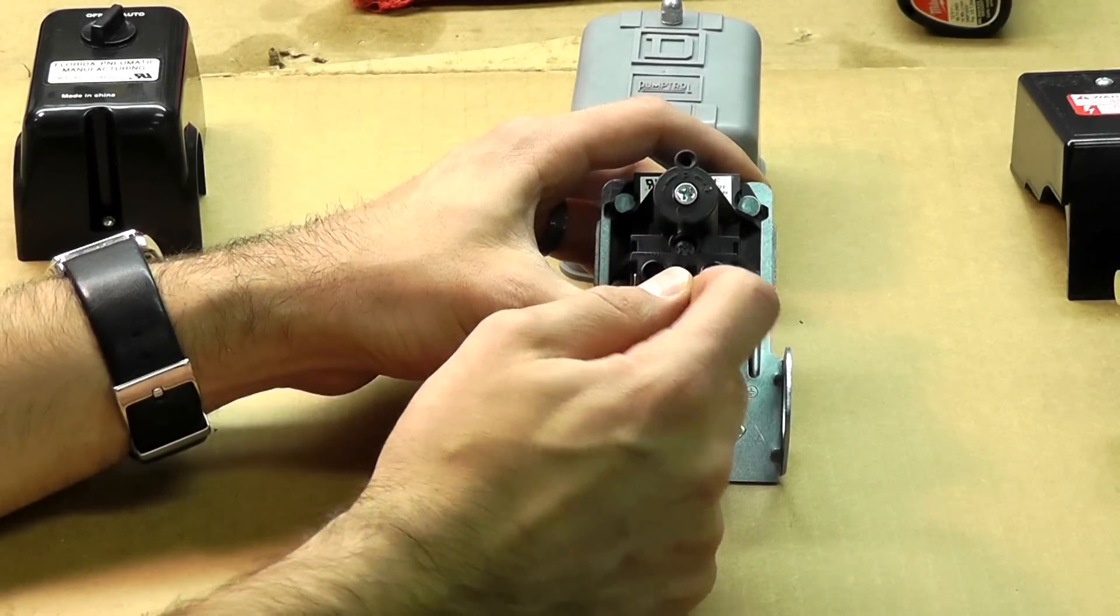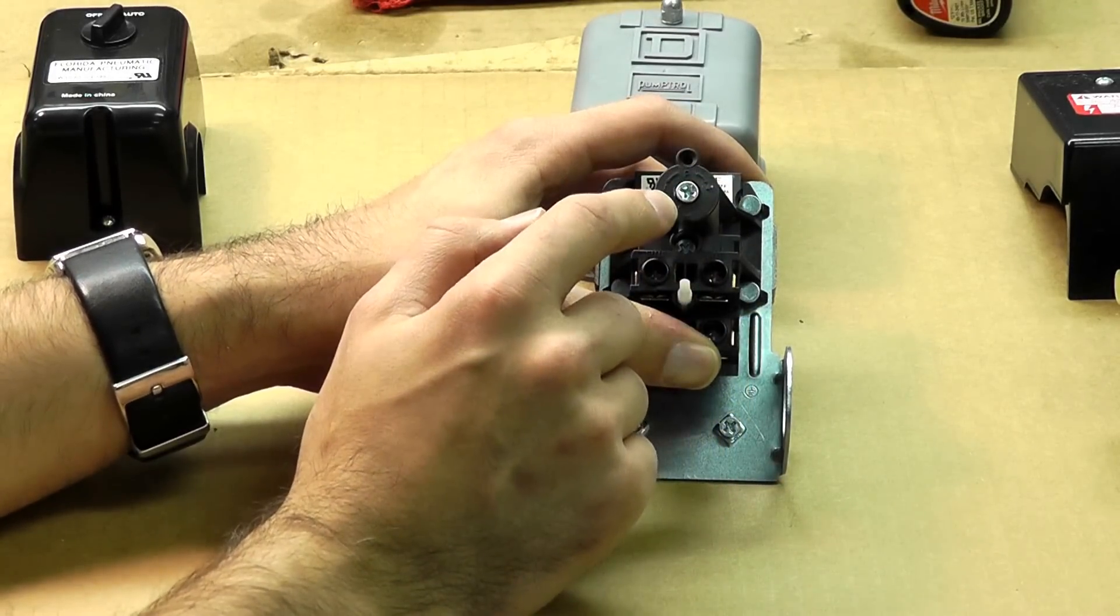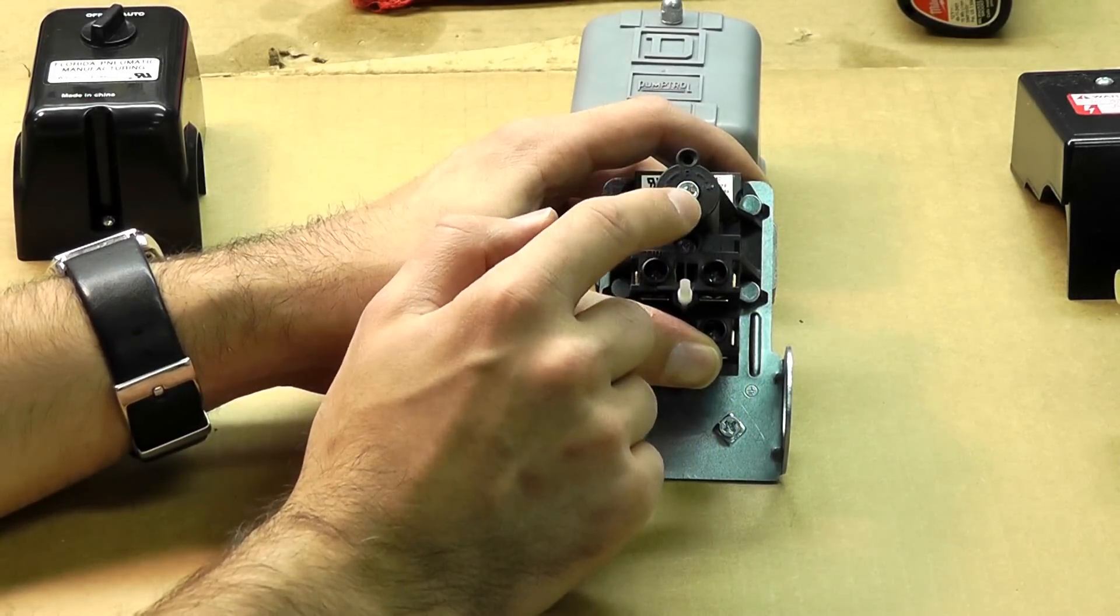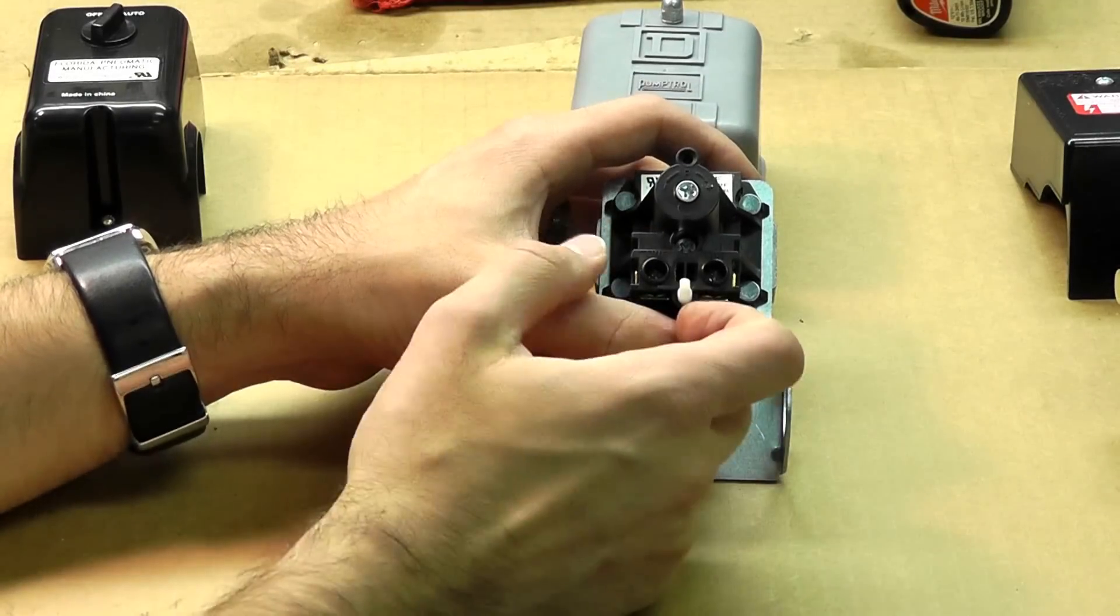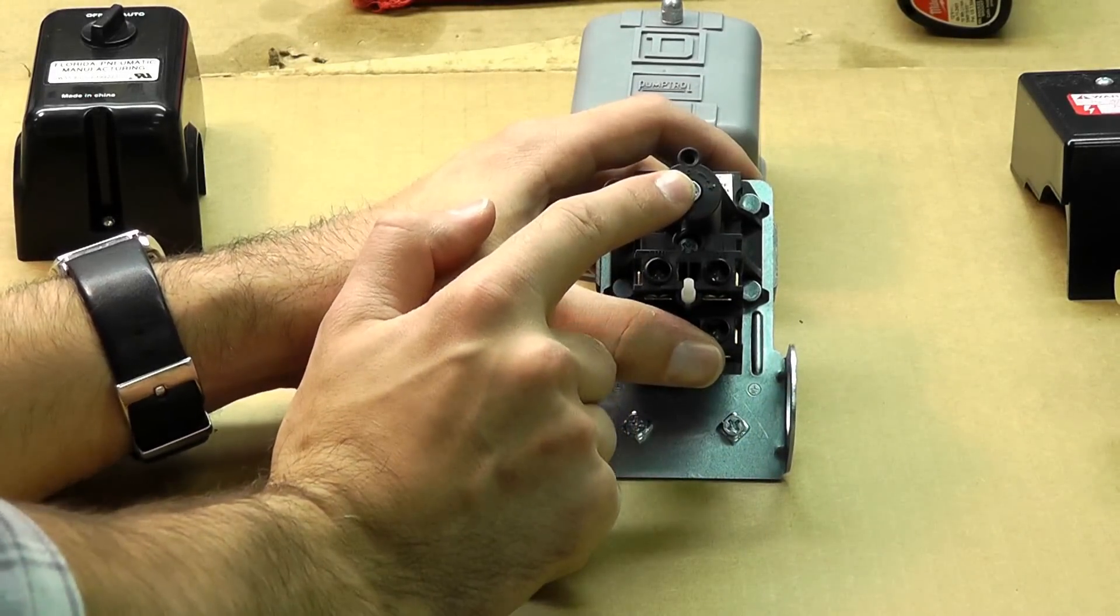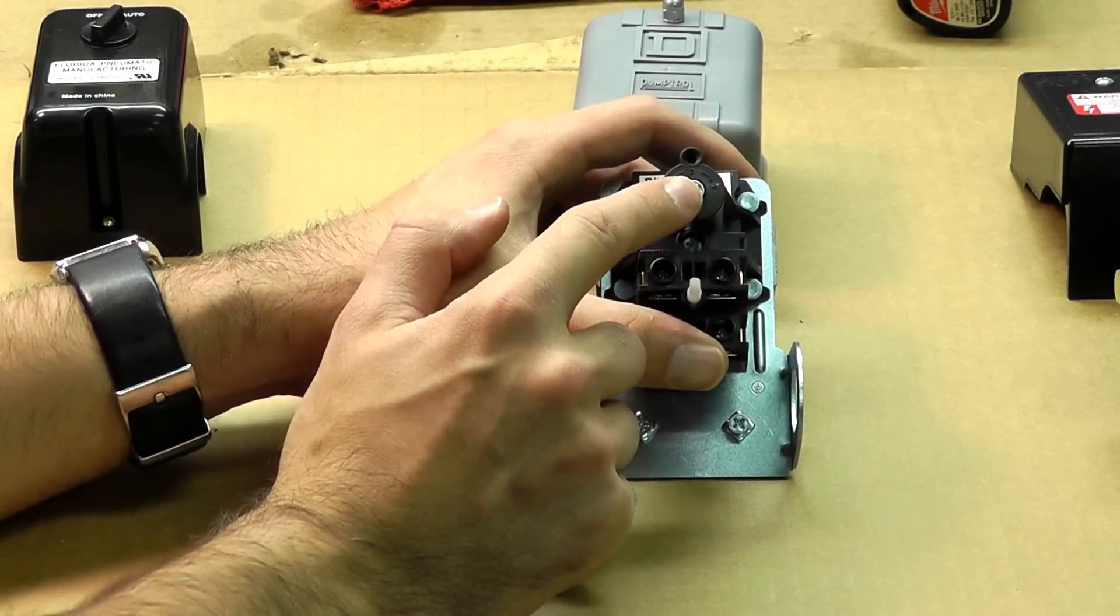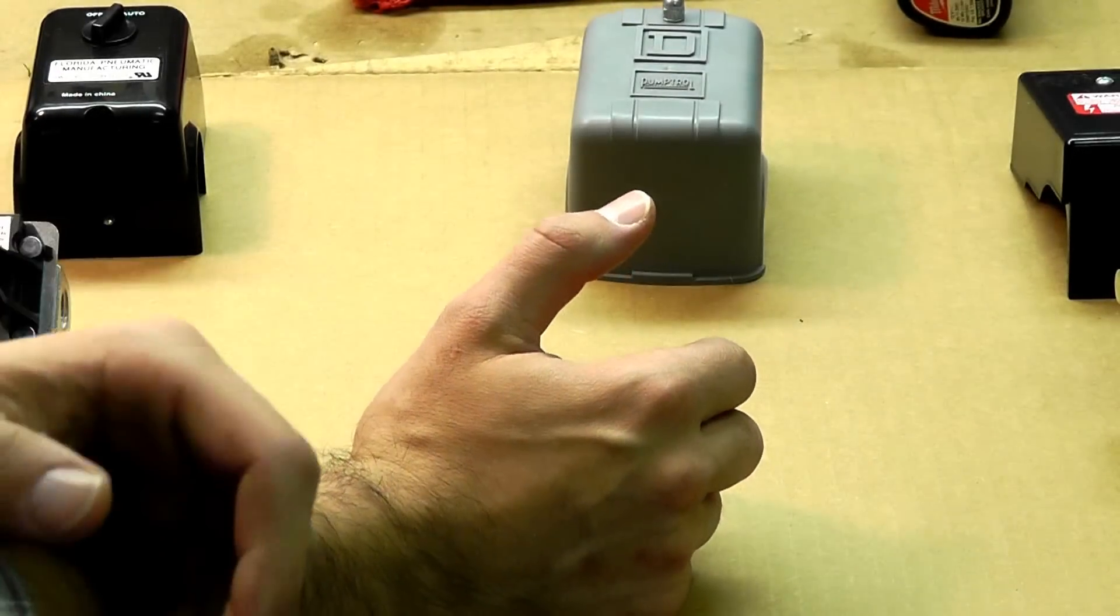So it doesn't have a separate adjustment for minimum or maximum cut-out. To increase the cut-in and the cut-out pressure both, you would turn this clockwise. To decrease it, turn it counterclockwise. So pretty simple to do.